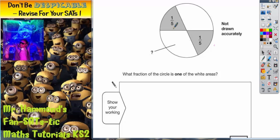So we know that this fifth of the circle is 20% because 1 fifth is 20%. This fifth of the circle, which is shaded, is also 20%. So far, the shaded parts of the circle is 20% plus another 20%, which is 40%.